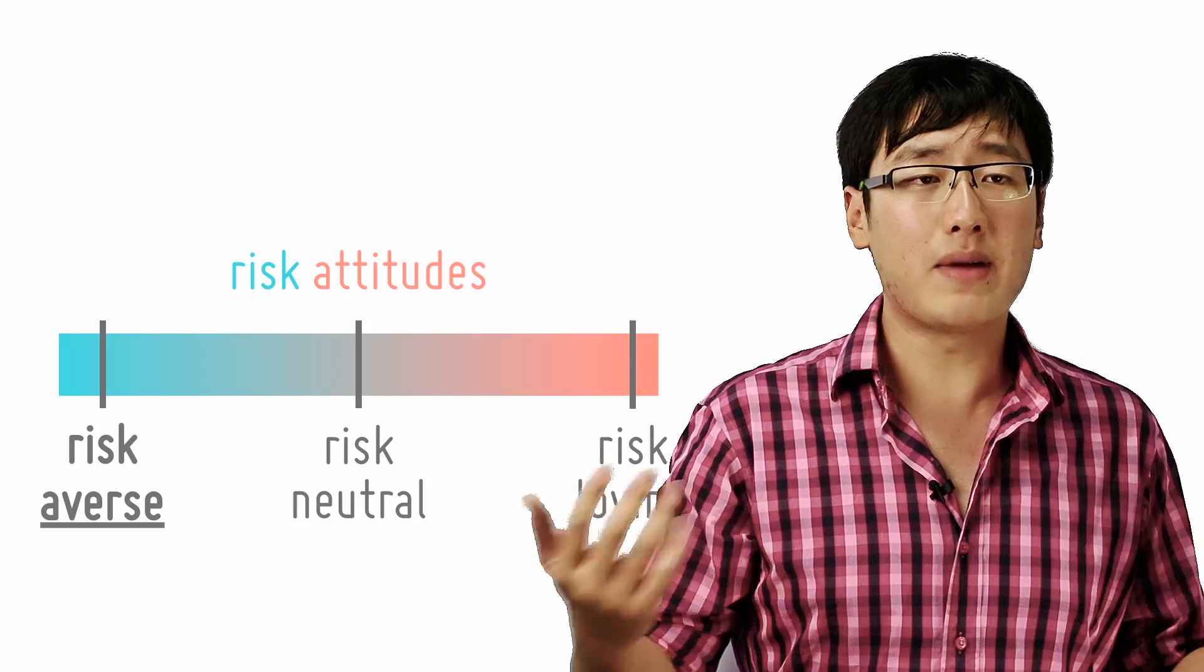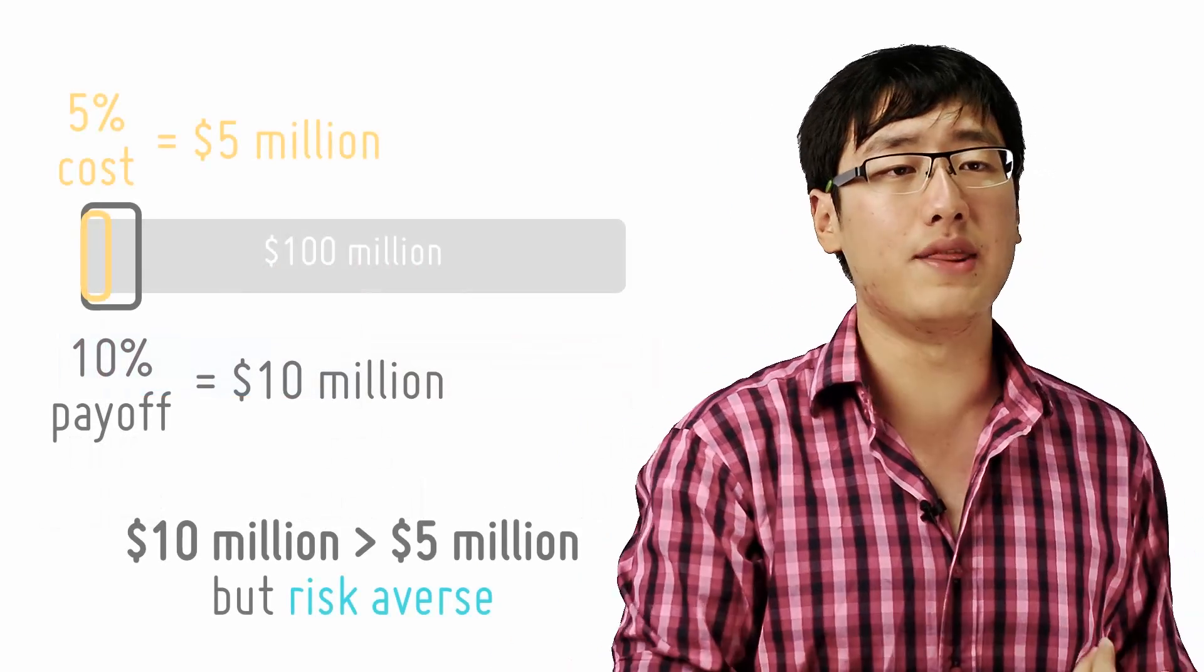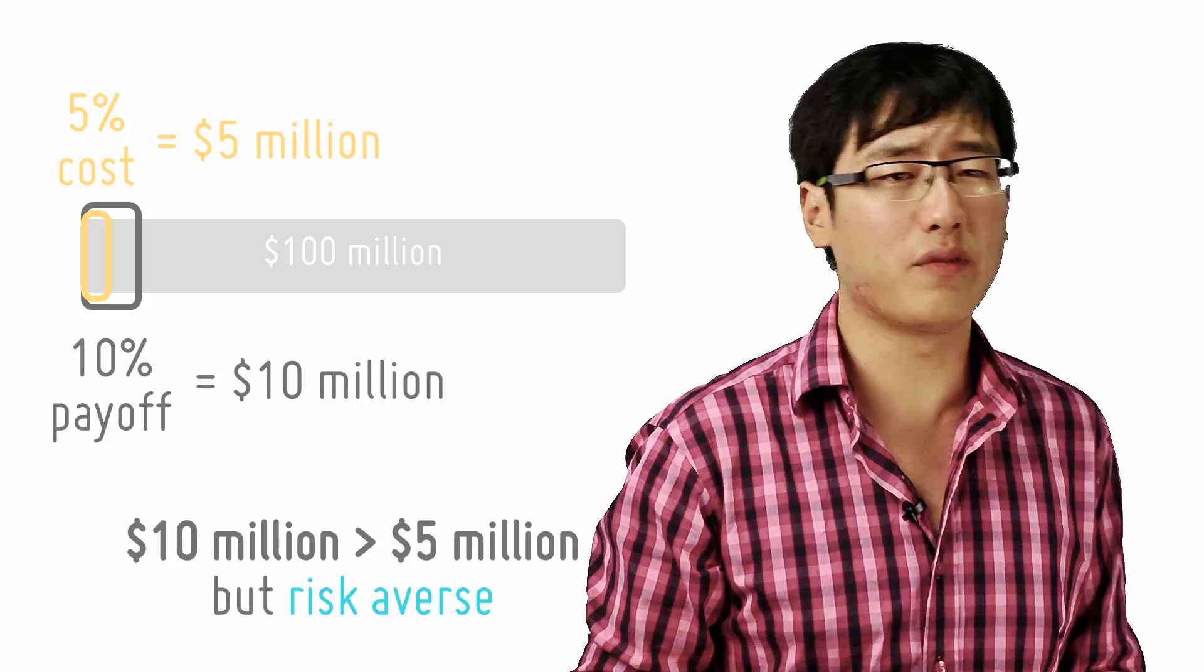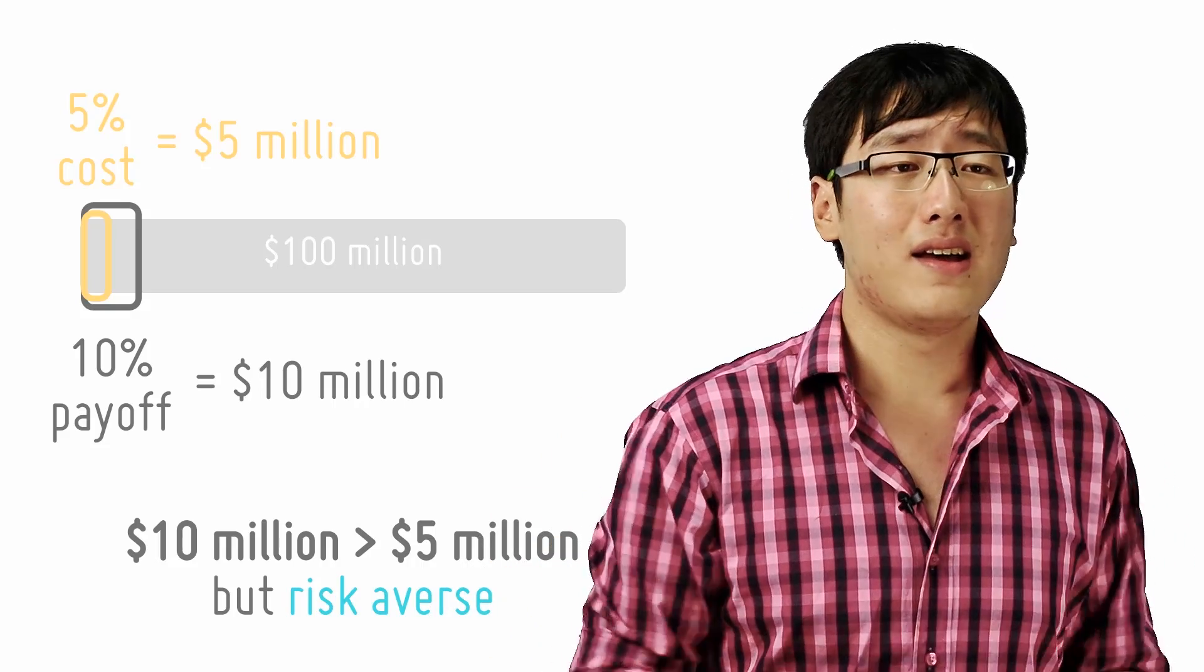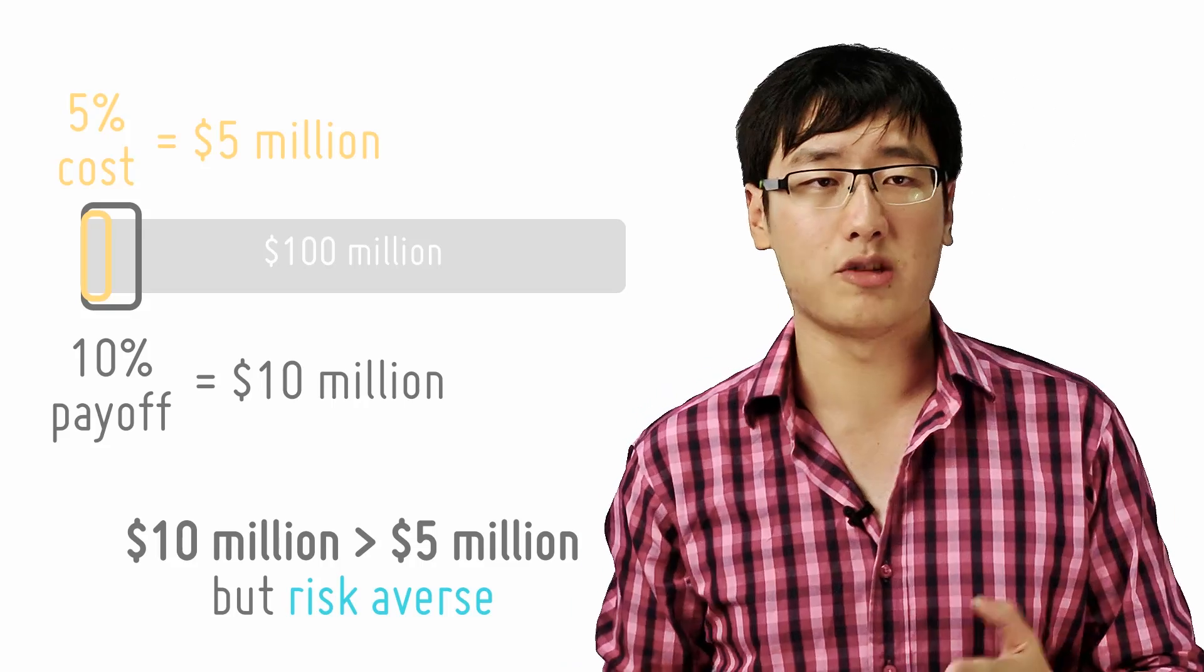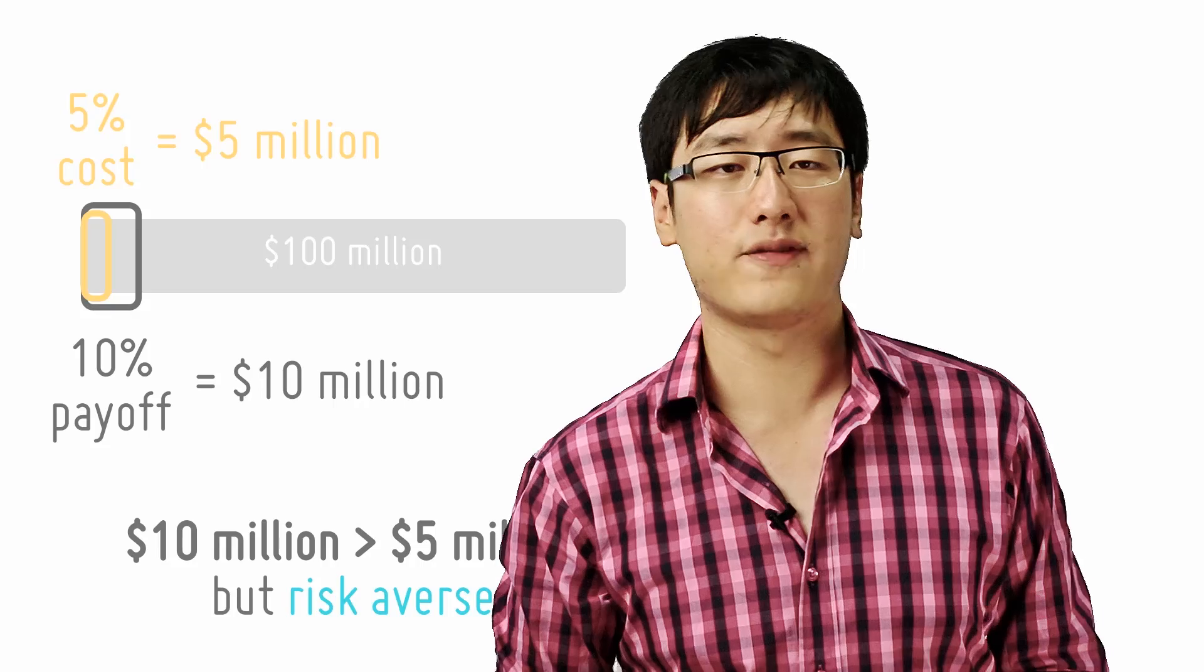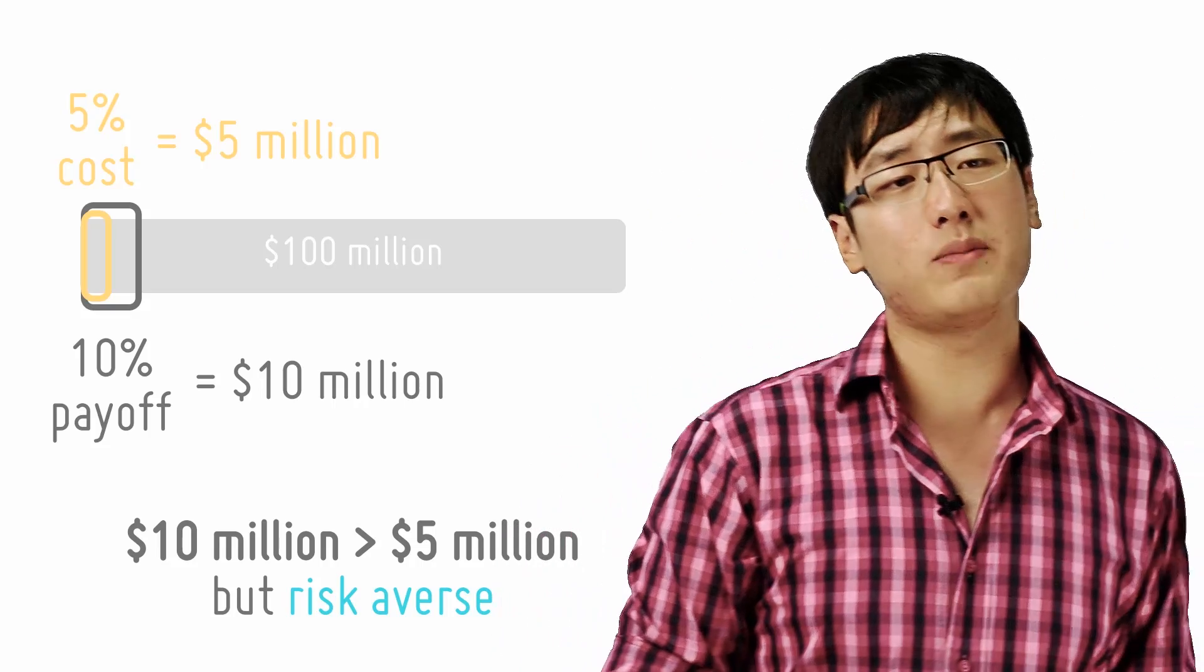For example, there might be a project that a firm can take on. It will earn them $100 million. Now, that's a huge amount of money. But the success rate of the project is only 10%. So the expected payoff is 10% times $100 million, which is $10 million. And let's say the cost of the project is $5 million. A rational firm should be able to do it.